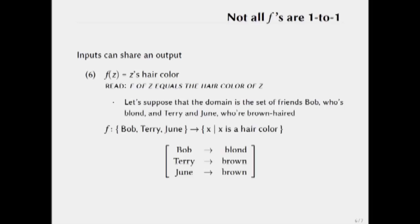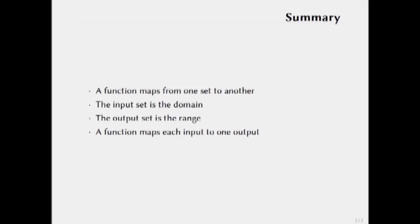So to summarize, a function maps from one set to another. The input set is the domain, the output set is the range, and the function maps each input to one output.